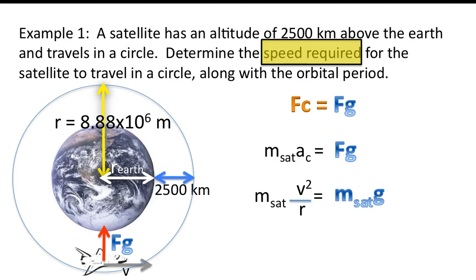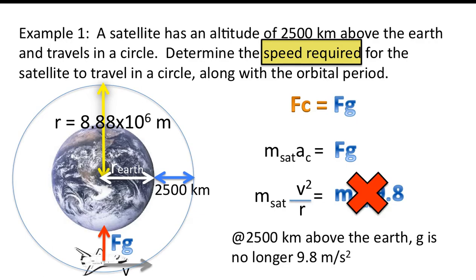Now, this is another common error students make. They're very used from an earlier course in physics to write Fg equals mg. And it makes sense. Except in this situation, the problem is that the g value at 2,500 kilometers above the earth is no longer 9.8. And so, this is incorrect. So, please keep that in mind. Because we're not at the surface of the earth, because we're at 2,500 kilometers above the earth's surface, the g value is no longer 9.8. It's actually significantly lower. So, we can't use a simple formula of mg.